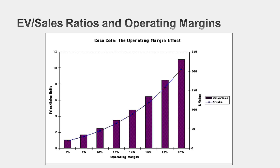When you look at margins, keep in mind: if you buy Coca-Cola, you're making a bet that those high margins will stay high over time. If they stay high, you're okay. But if those margins ever come under assault, your enterprise value-to-sales ratio can melt down in a hurry — and will melt down disproportionately.